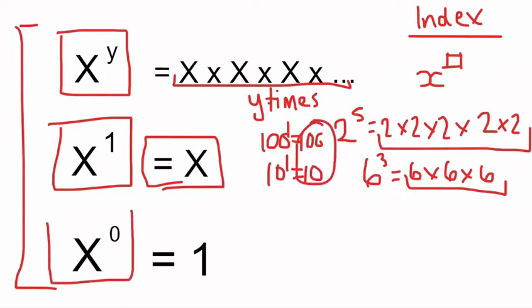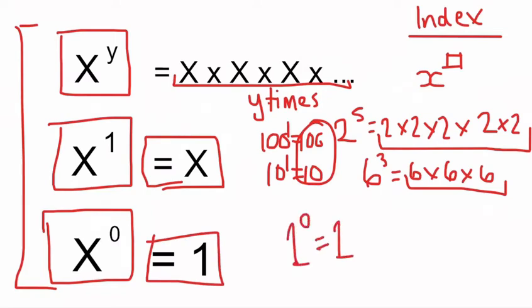The last index law — probably the most tricky one — is x to the power of 0. We're not going to get into why in this video, but all we need to know is that any number to the power of 0 is equal to 1. So 1 to the power of 0 is 1, and 100 to the power of 0 is 1 — it doesn't matter what the number is, it's always equal to 1.